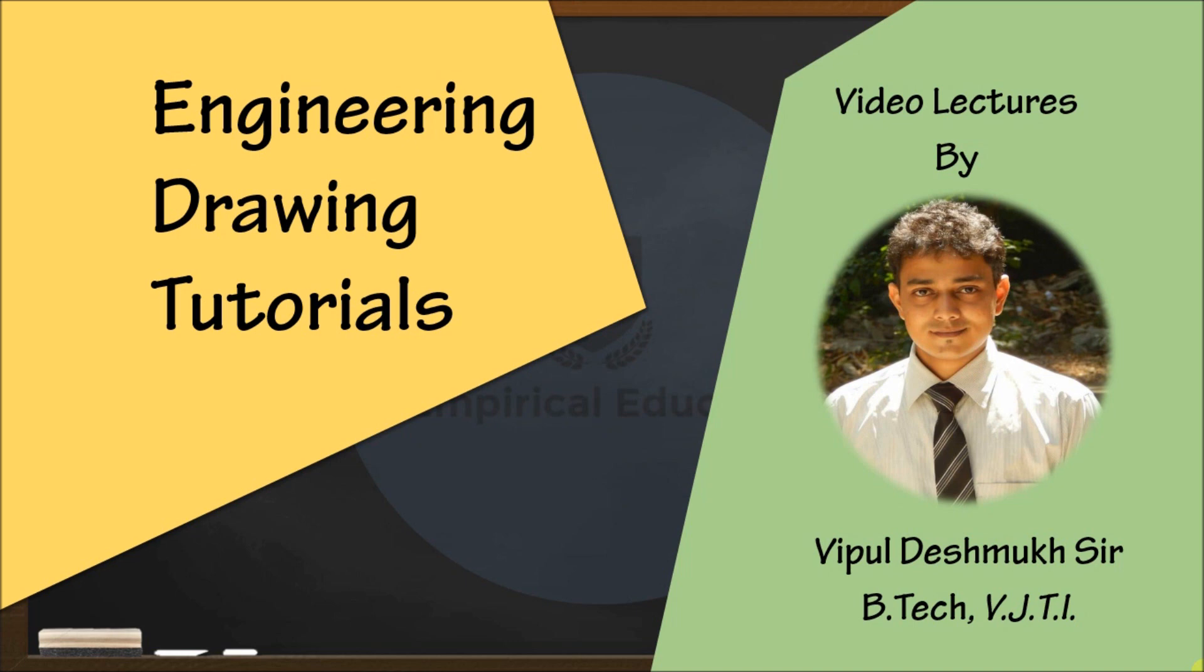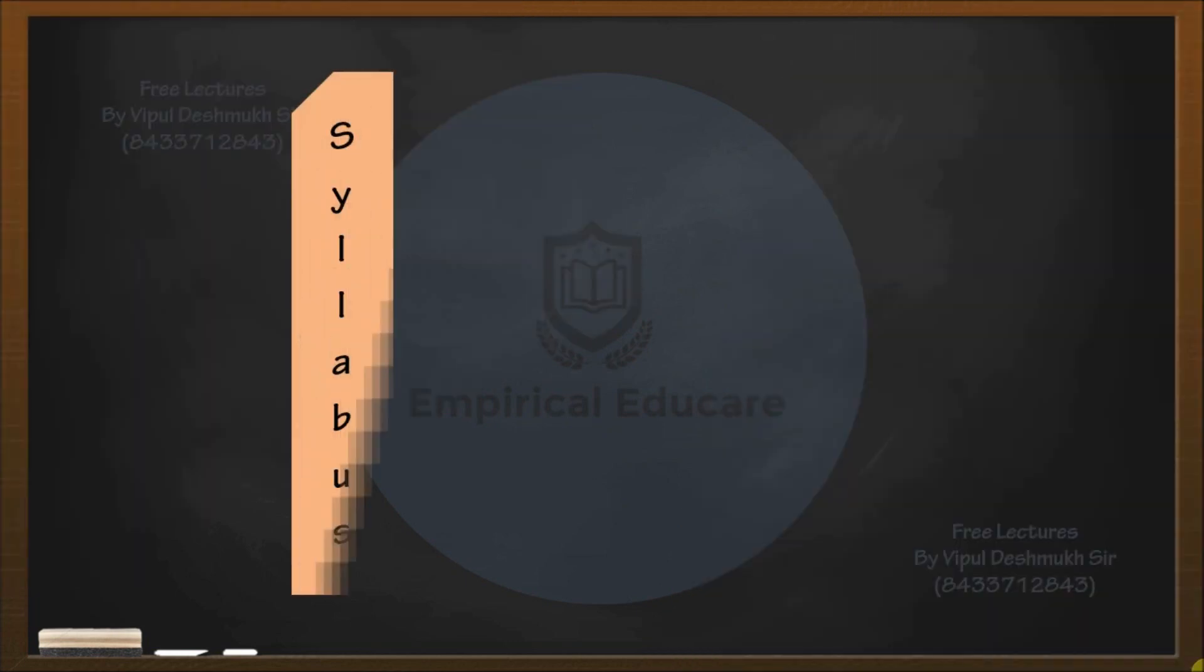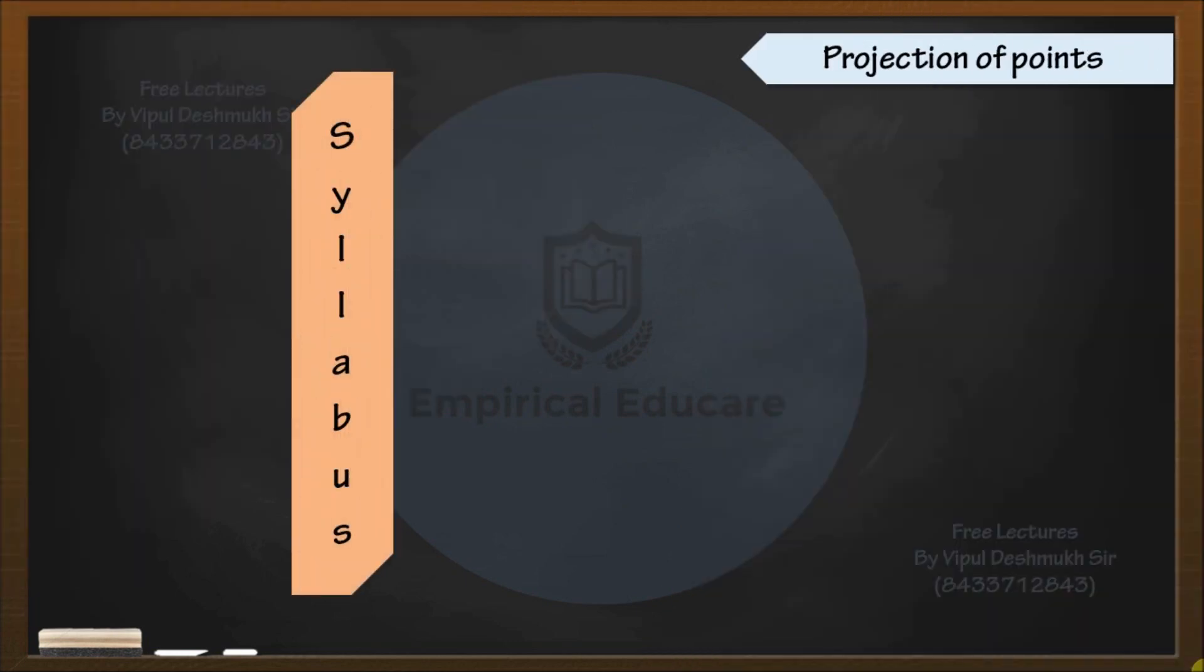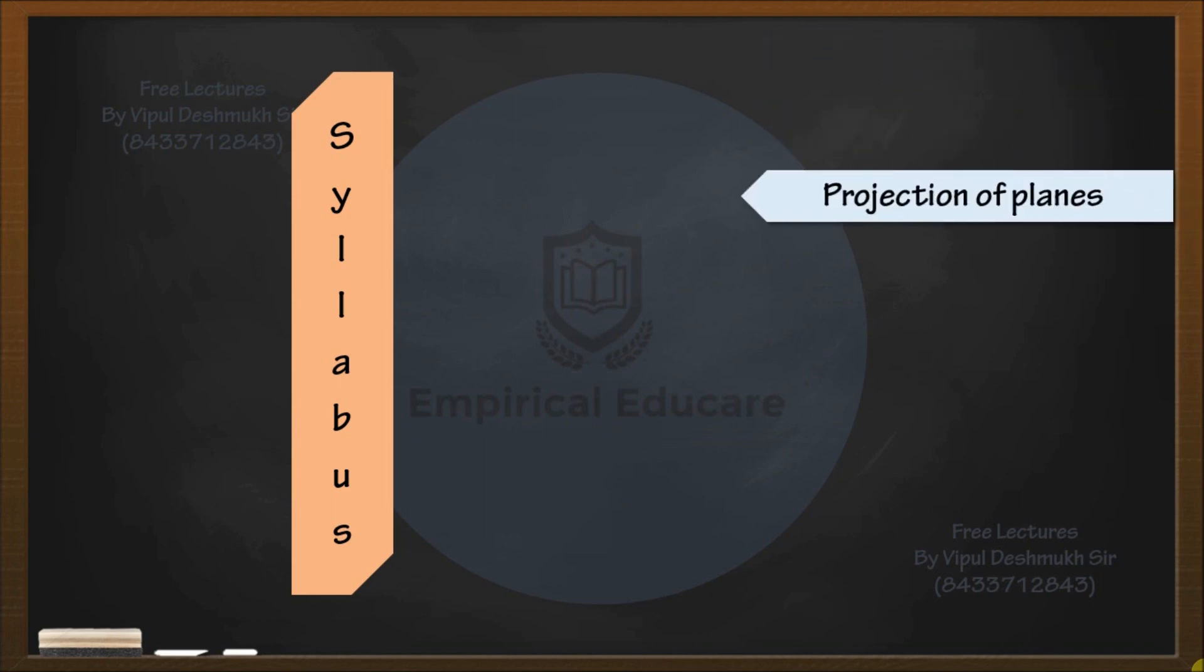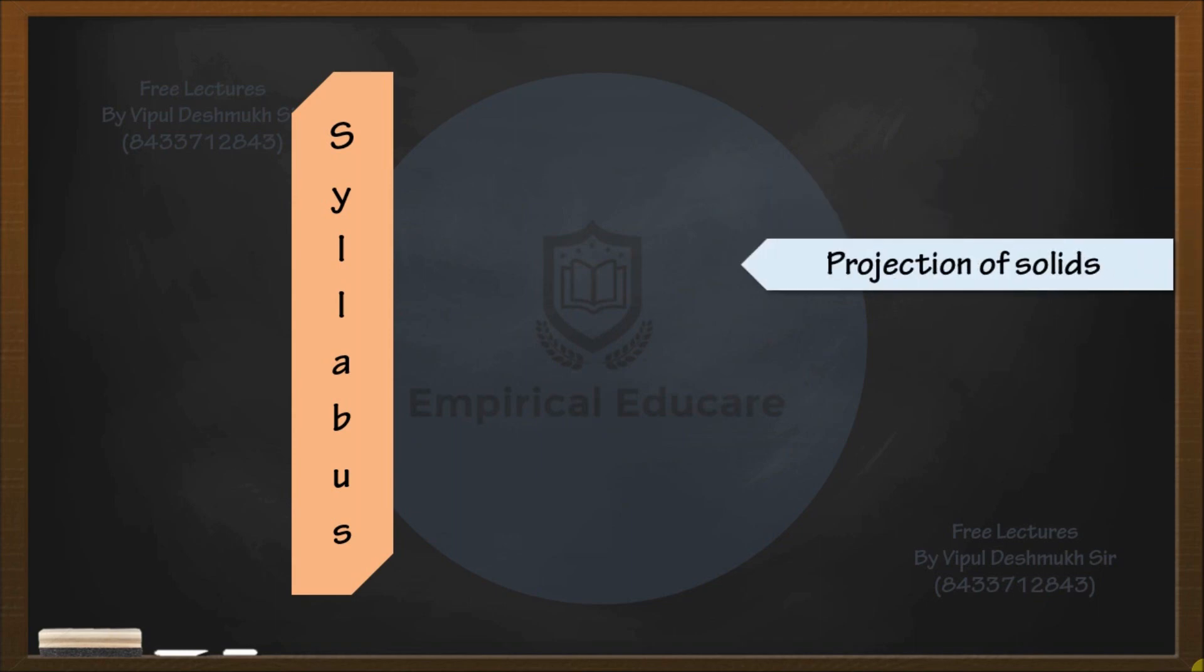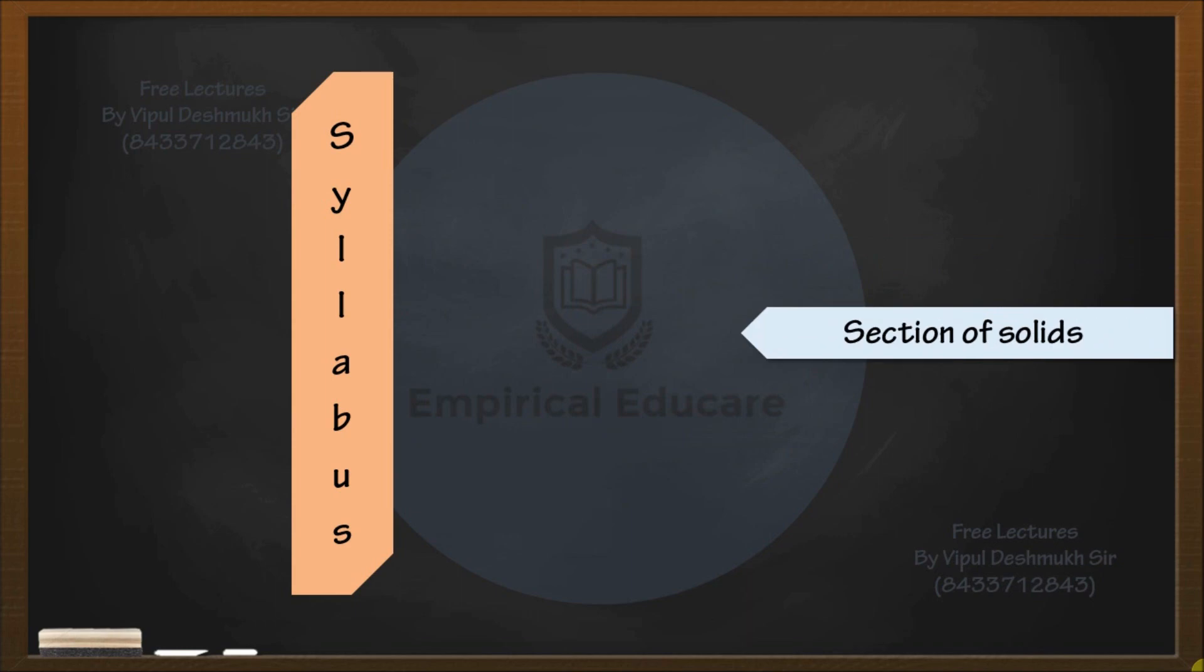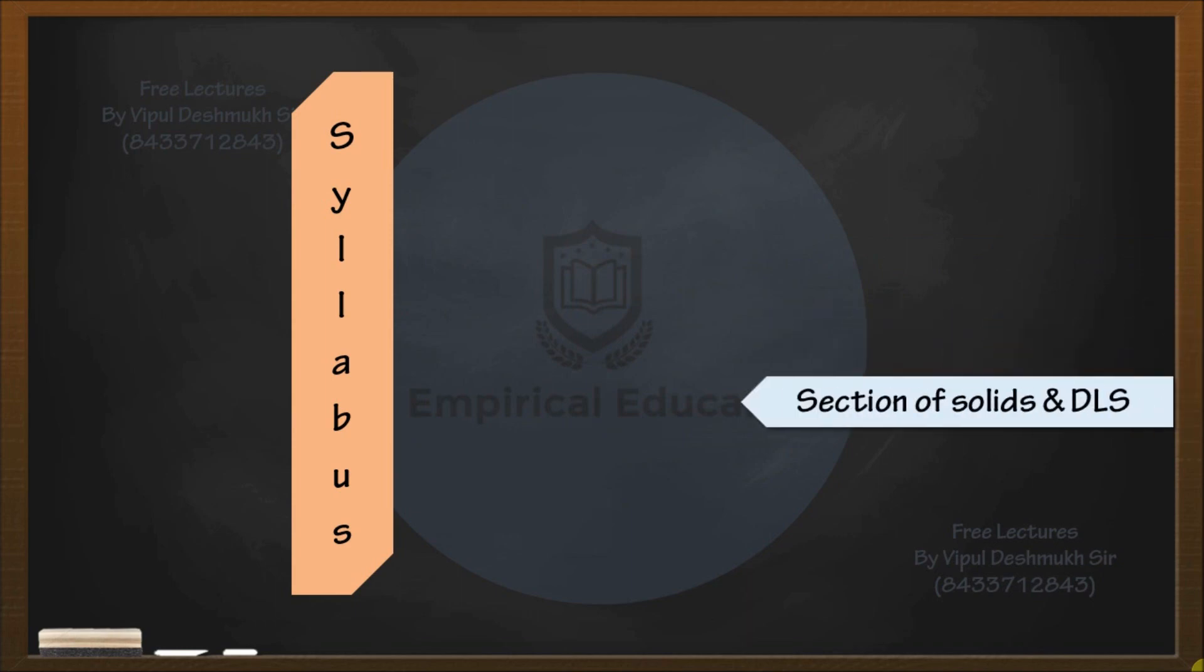Let us start with the syllabus. The first chapter is projection of points, the second chapter is projection of lines, the third chapter is projection of planes, the fourth chapter is projection of solids, and the fifth chapter is section of solids.